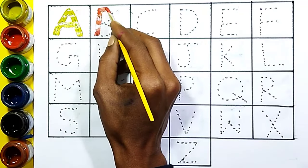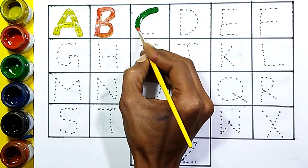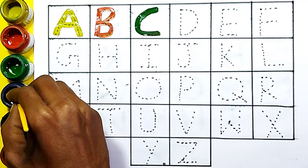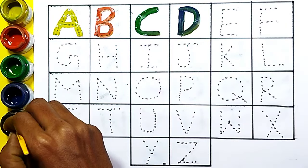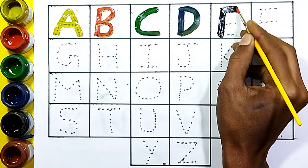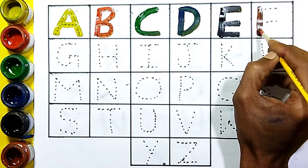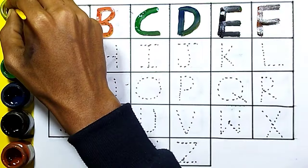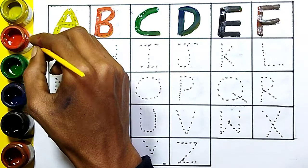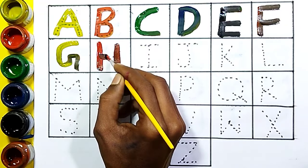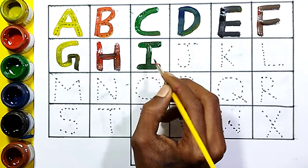A for apple, red color. B for ball, green color. C for cat, blue color. D for dog, black color. E for elephant, brown color. F for face, yellow color.